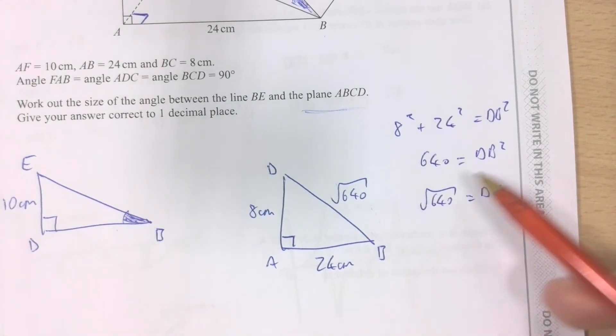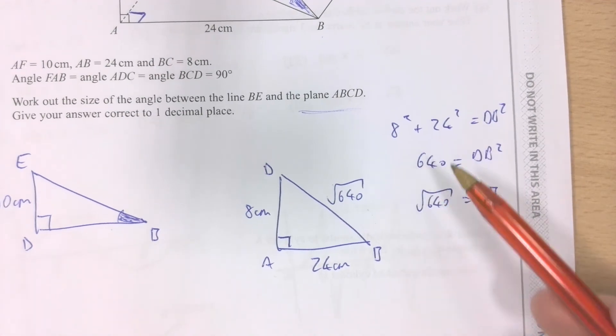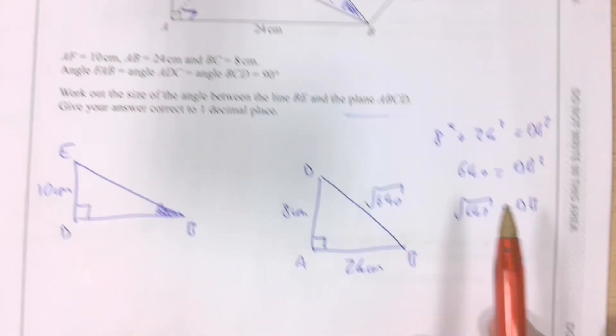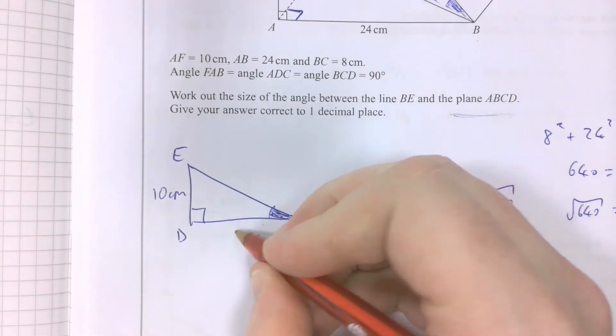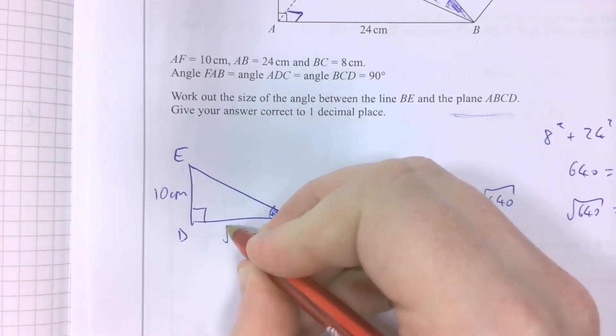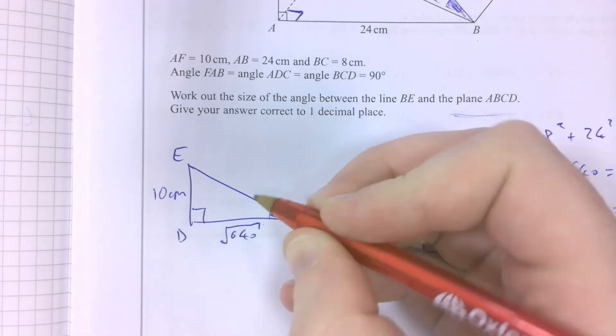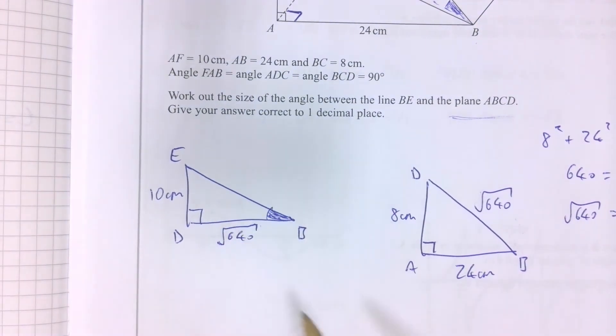It reduces the accuracy of my future working. So leaving it as root 640 is a perfectly acceptable, nay, encouraged thing to do. So those are my two lengths.